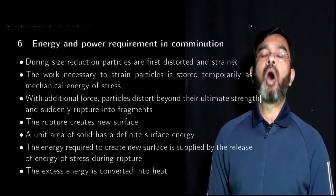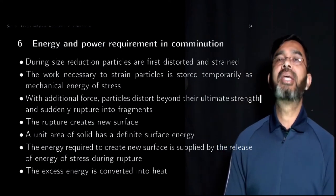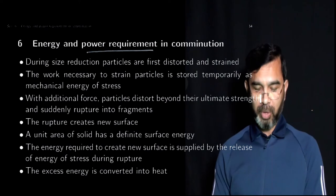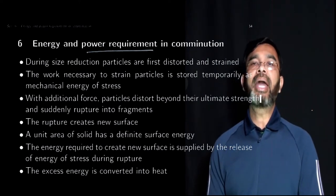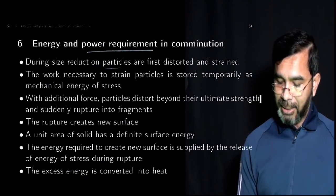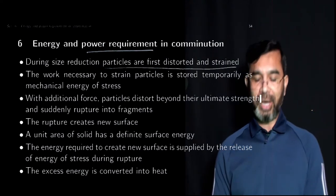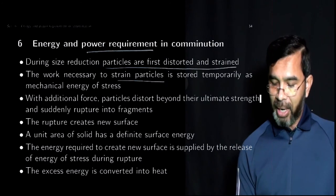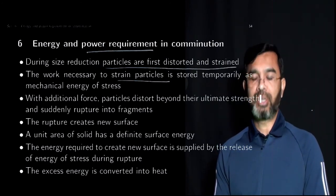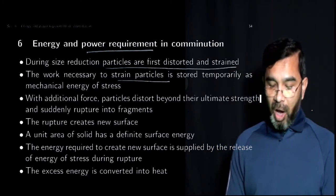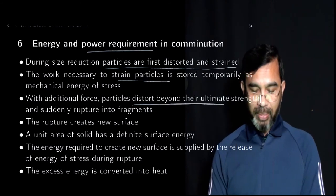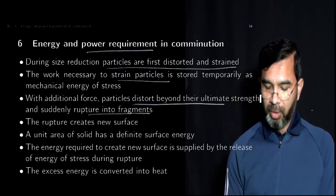One of the main operational costs of this type of mill is power, and we need to calculate the energy and power requirement in the comminution process. Let's look at the mechanism of how particles break into smaller pieces. Particles are first distorted and strained. The work required to strain particles is stored temporarily as mechanical energy of stress, and when it goes beyond a certain limit, particles are stressed beyond their ultimate strength and suddenly rupture into fragments.